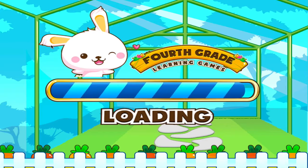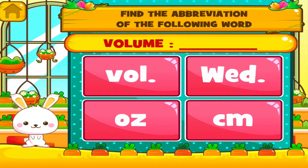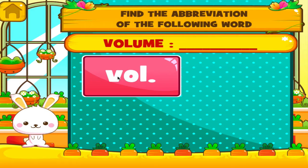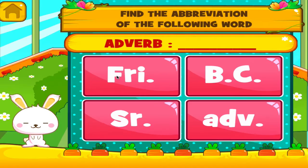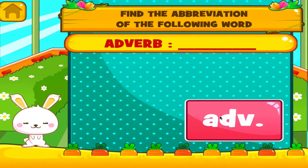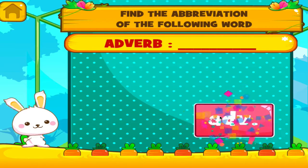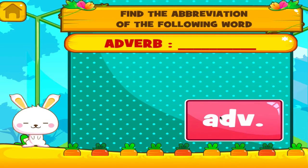Abbreviation. Tap the correct answer. Hey, you're really good at this. Tap the correct answer. See? You can do this. Tap the correct answer. Hey, you're really good at this.